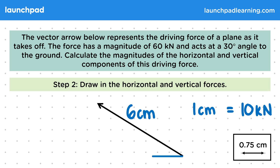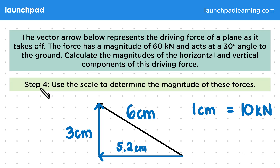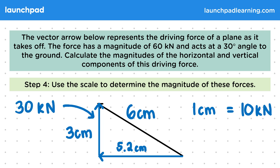For step 2, we want to draw in the horizontal and vertical forces. Then for step 3, we need to measure the lengths of these forces. The vertical component is measured to be 3 cm and the horizontal 5.2 cm. For step 4, we use the scale to determine the magnitude of these forces: the 3 cm vector is equal to 30 kN and the 5.2 cm arrow is equal to 52 kN.